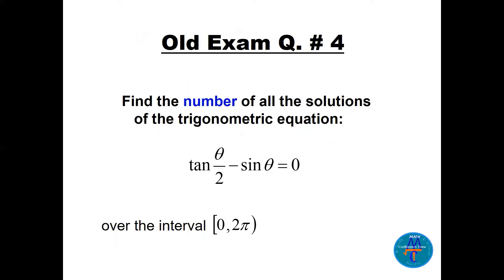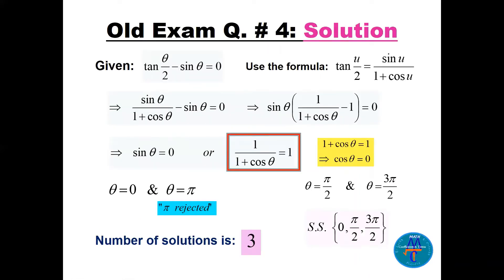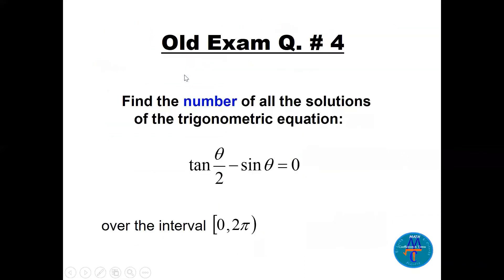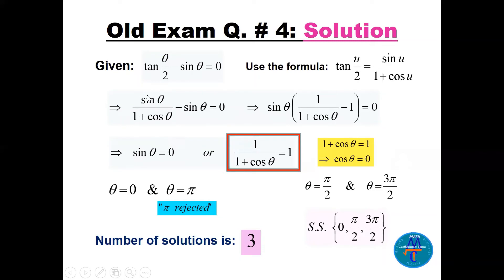Question four: find the number of solutions of tan(θ/2) − sin θ = 0 on [0, 2π]. We use the half-angle formula: tan(u/2) = sin u / (1 + cos u). Replacing tan(θ/2) gives sin θ/(1 + cos θ) − sin θ = 0. Factor out sin θ: sin θ · [1/(1 + cos θ) − 1] = 0. So either sin θ = 0, giving θ = 0 or θ = π (we'll check π shortly).